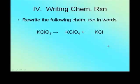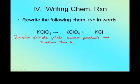How about this one? Rewrite the following chemical reaction in words. KClO₃. K is potassium. Right now, it's perfectly all right to have out your important ions to know sheet if you're not remembering all these compounds. ClO₃, chlorate. Potassium chlorate yields KClO₄, potassium perchlorate, and potassium chloride. I know it looks funky.